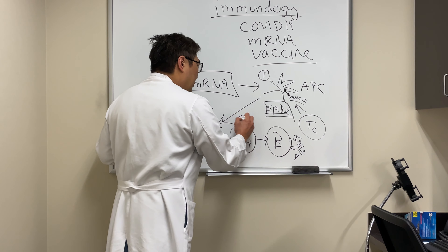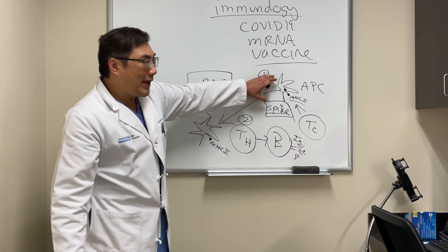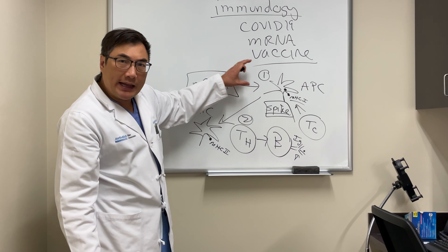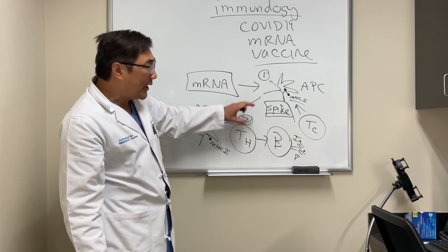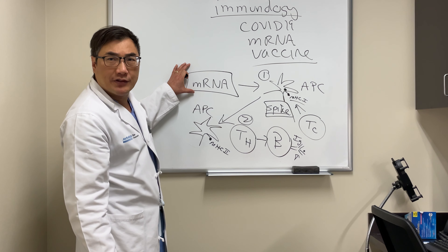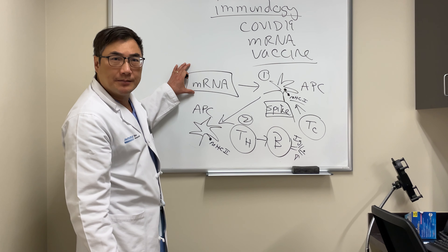So we have both the cytotoxic T-cell response and the antibody response. Both are dependent on APC — antigen-presenting cell — and that antigen arises from the mRNA that was given to you as the vaccine.